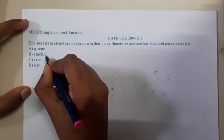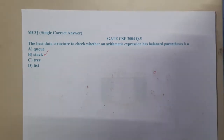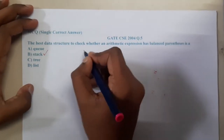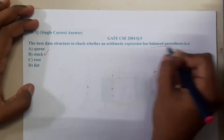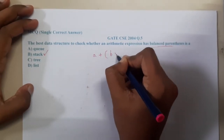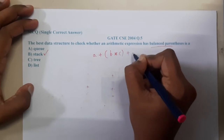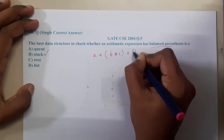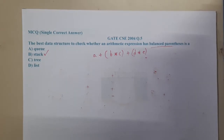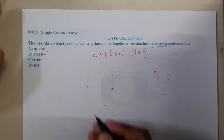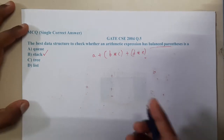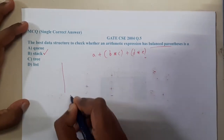So which structure is best? If you recall, the best structure for checking things will be a stack. We have an expression with parentheses — for example, a plus b into c plus d into e. Let us first check how it works with a stack, and after that we will check whether other structures work as well.